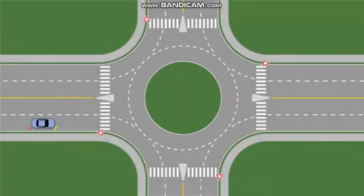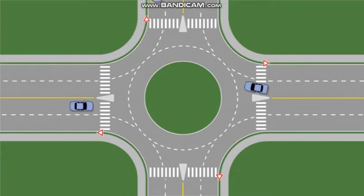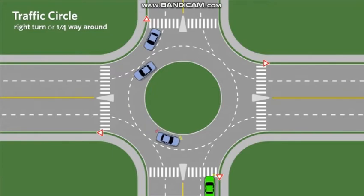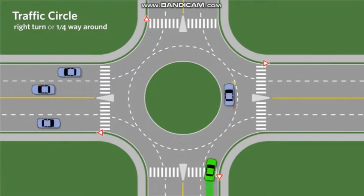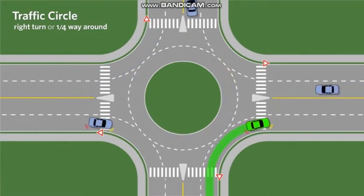For a one-quarter of the way around, the correct approach is to enter from the right or outside lane. Signal right, yield to pedestrians and traffic in the circle, proceed when safe, and exit in the right lane.